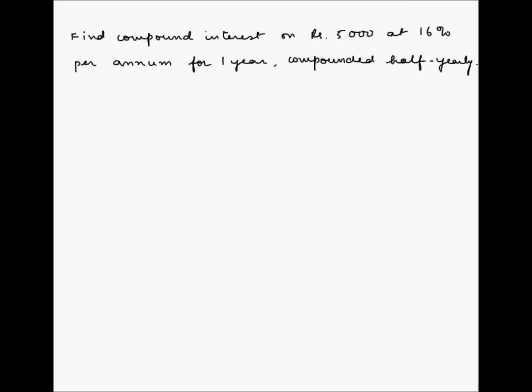Find compound interest on rupees 5000 at 16% per annum for one year compounded half yearly. Suppose you have deposited an amount of rupees 5000 in a bank and you want to take out the amount at the end of one year.